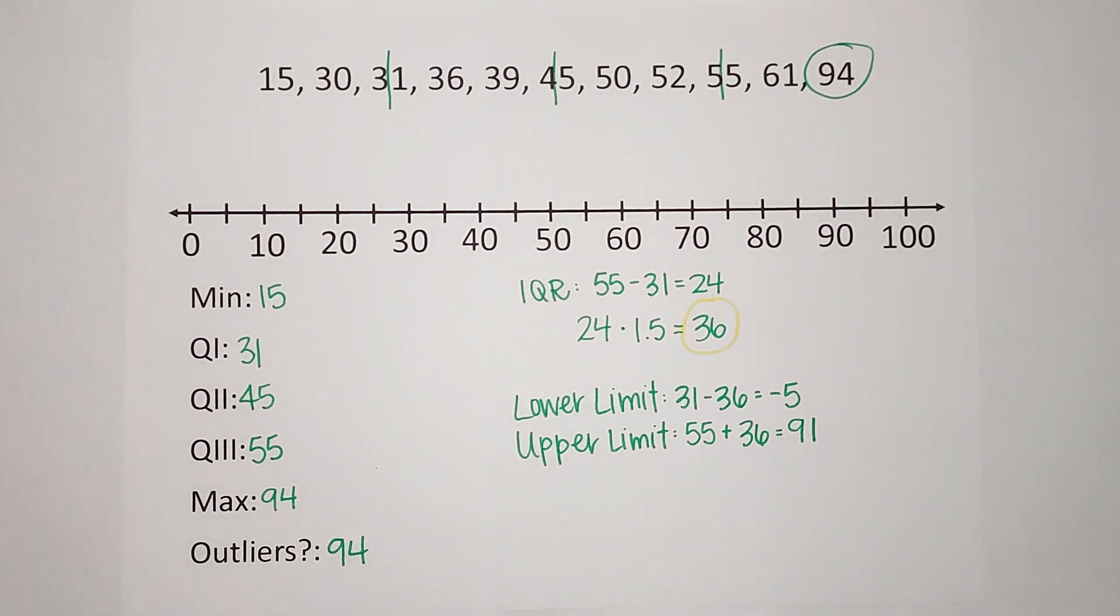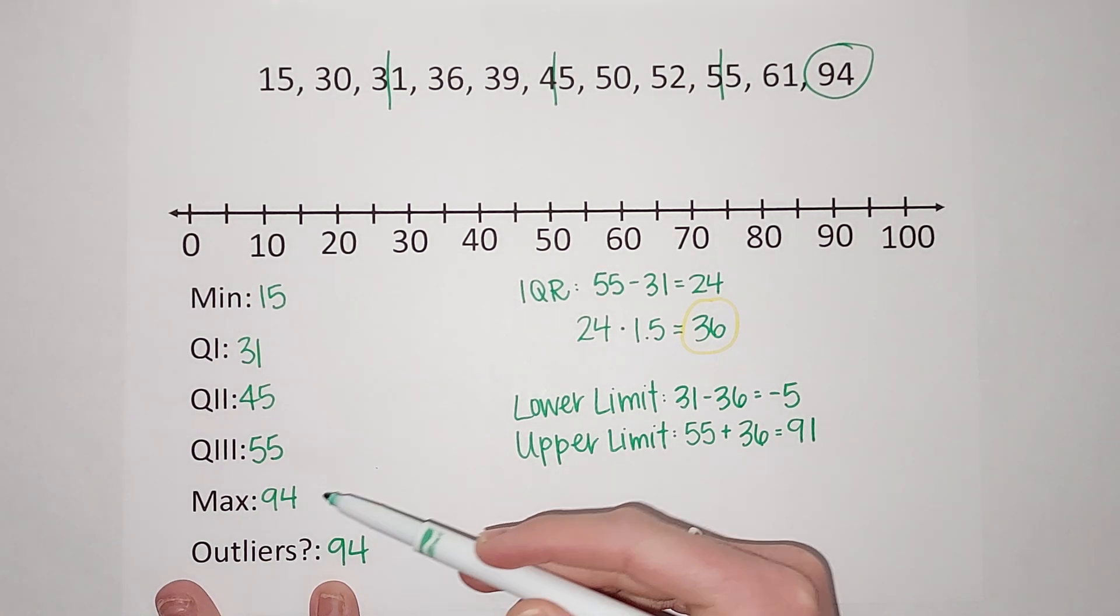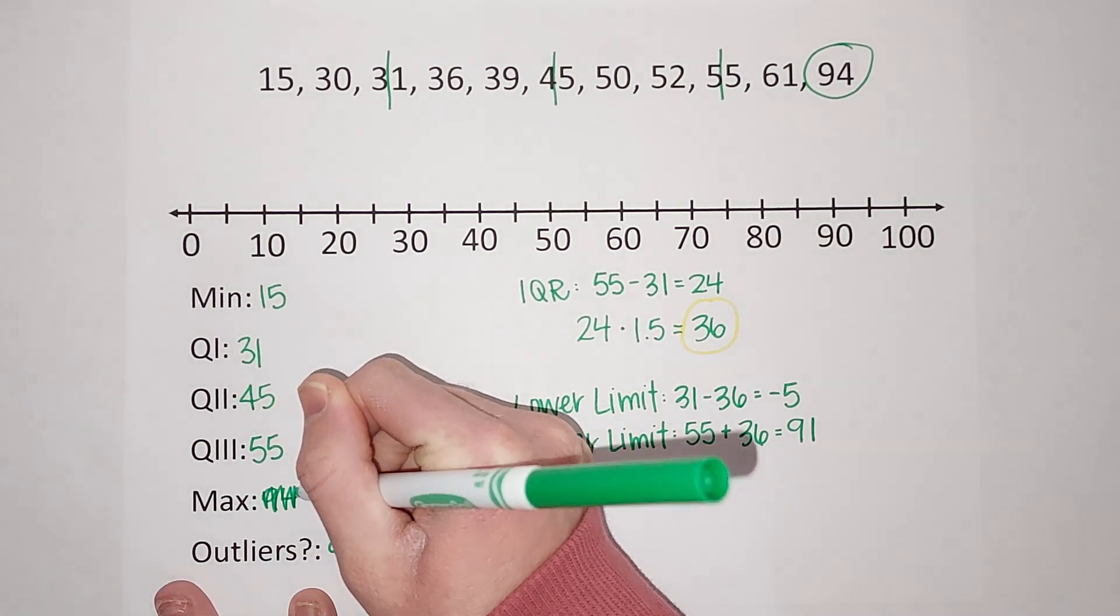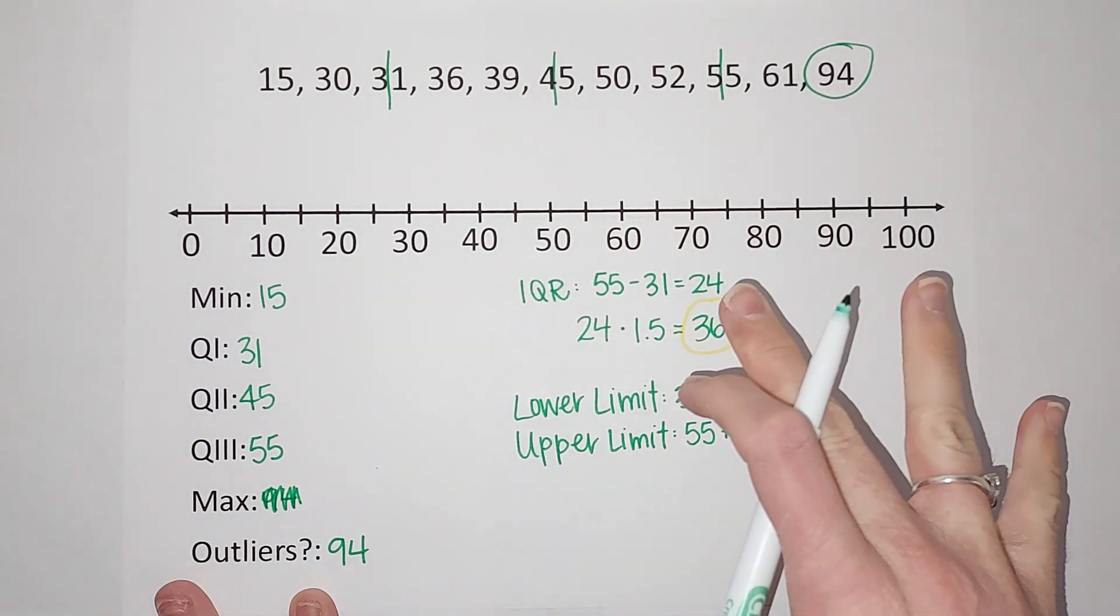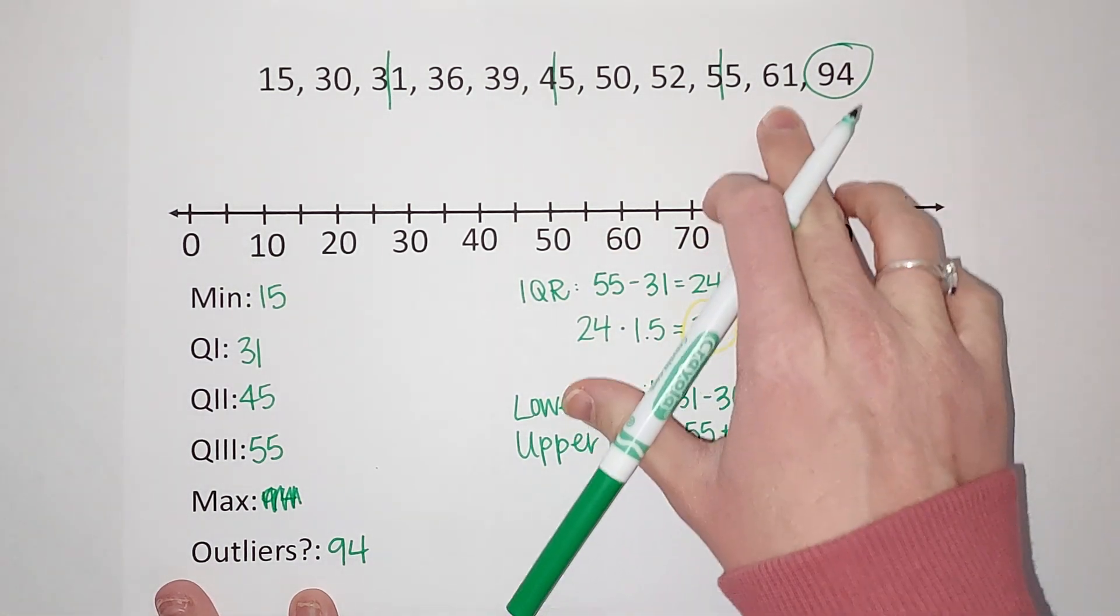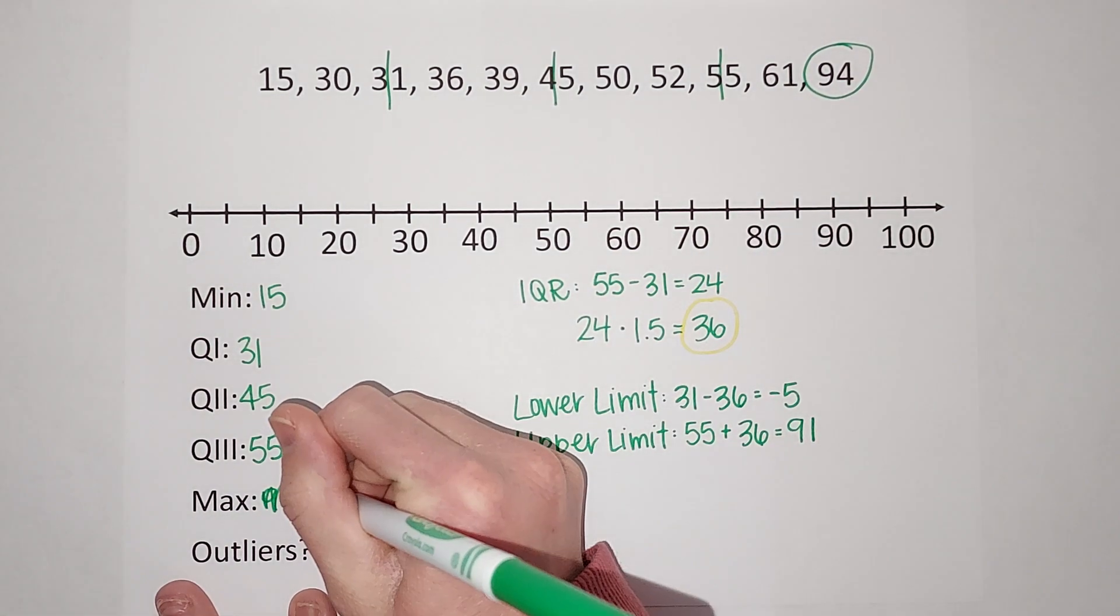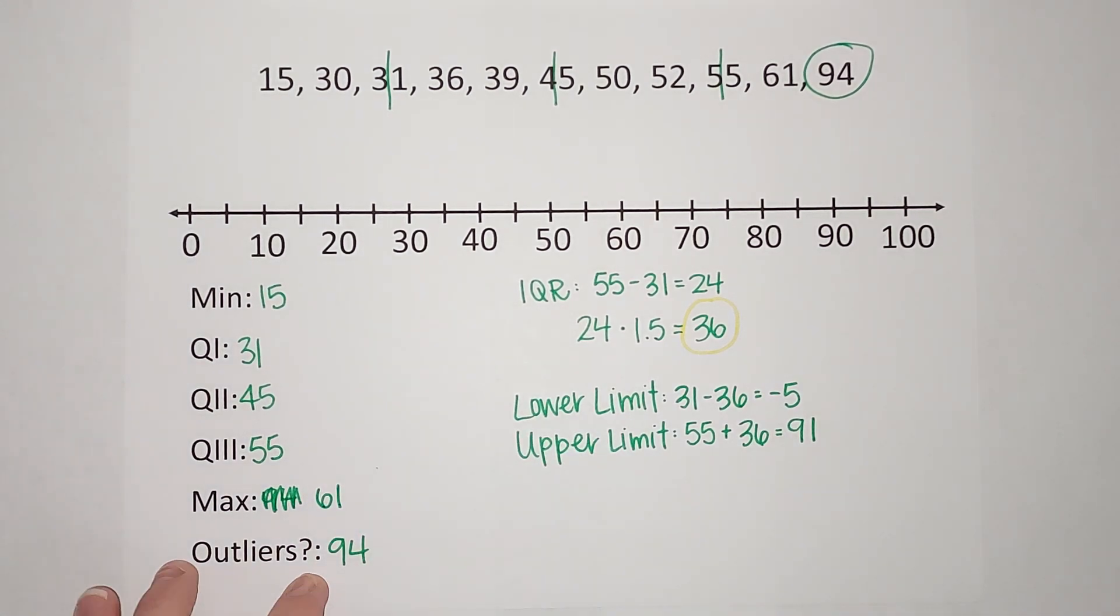What does this mean now that 94 is an outlier? That means it's no longer considered my max as far as my box plot goes. My max will be the one next to it, which is 61. That is my new max. My minimum is still the same.